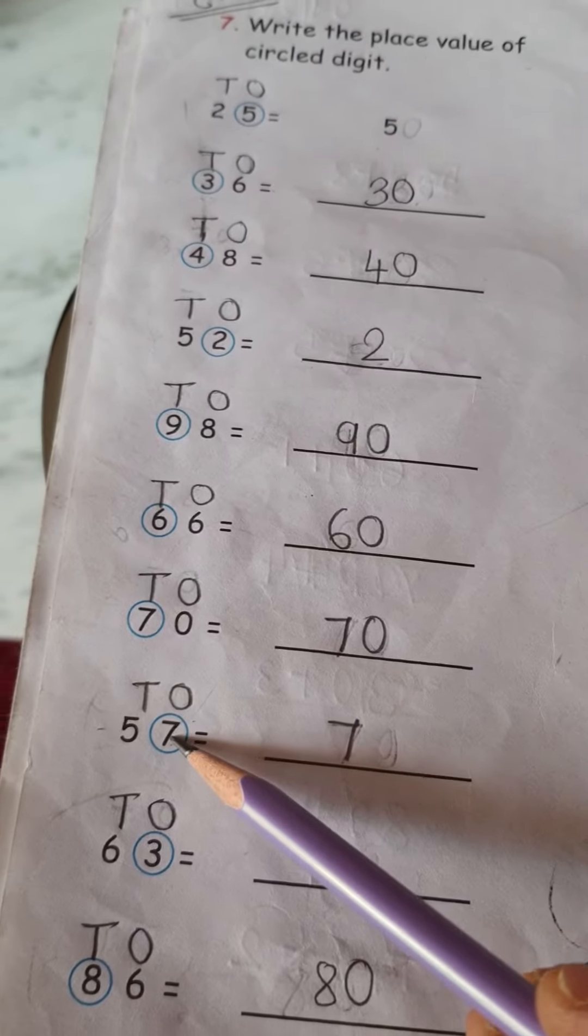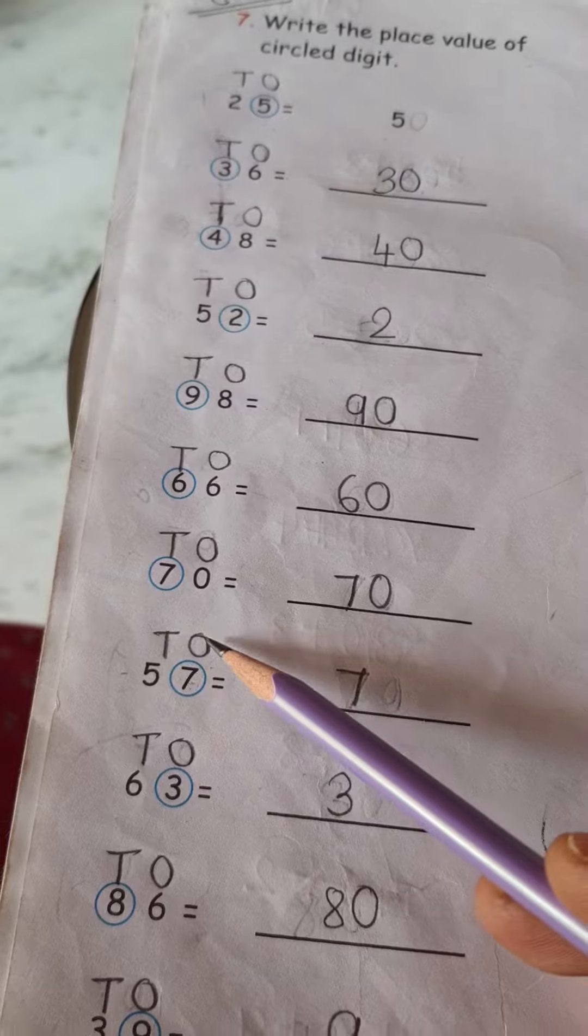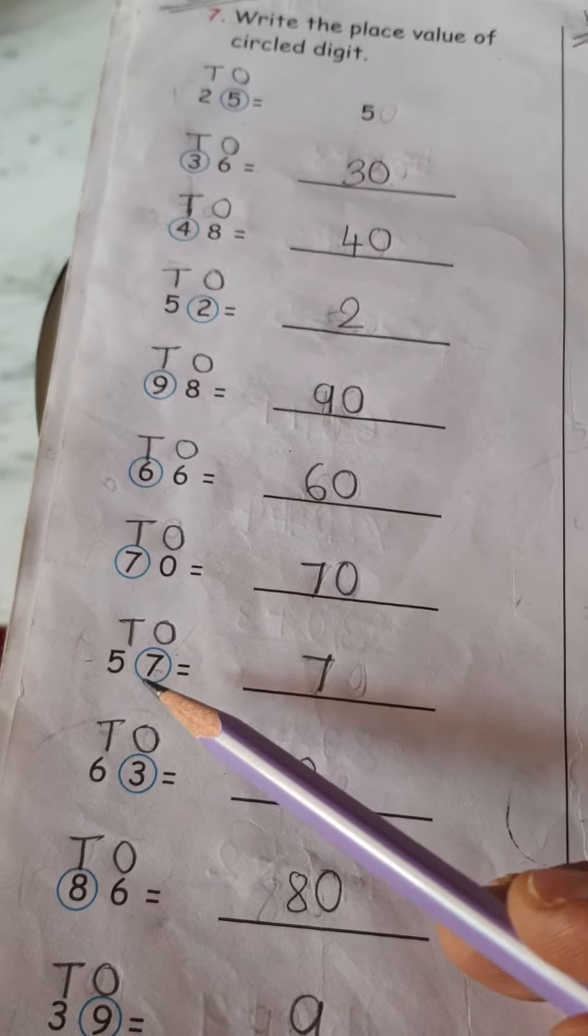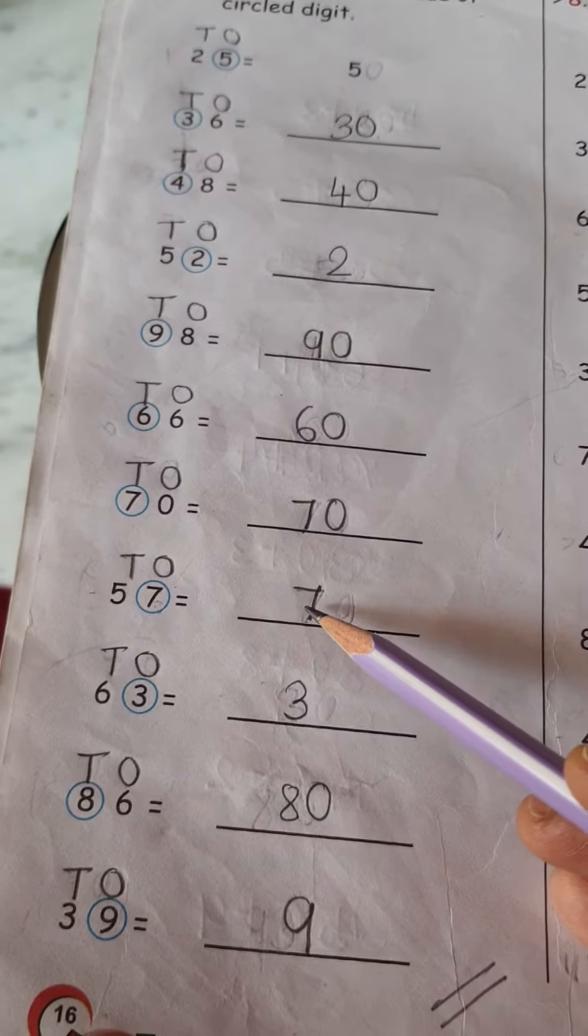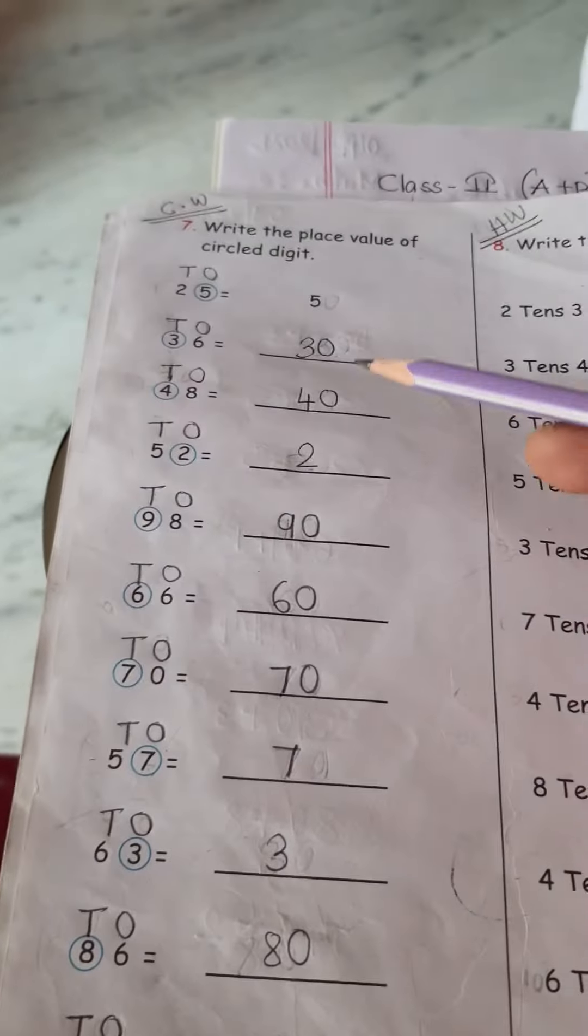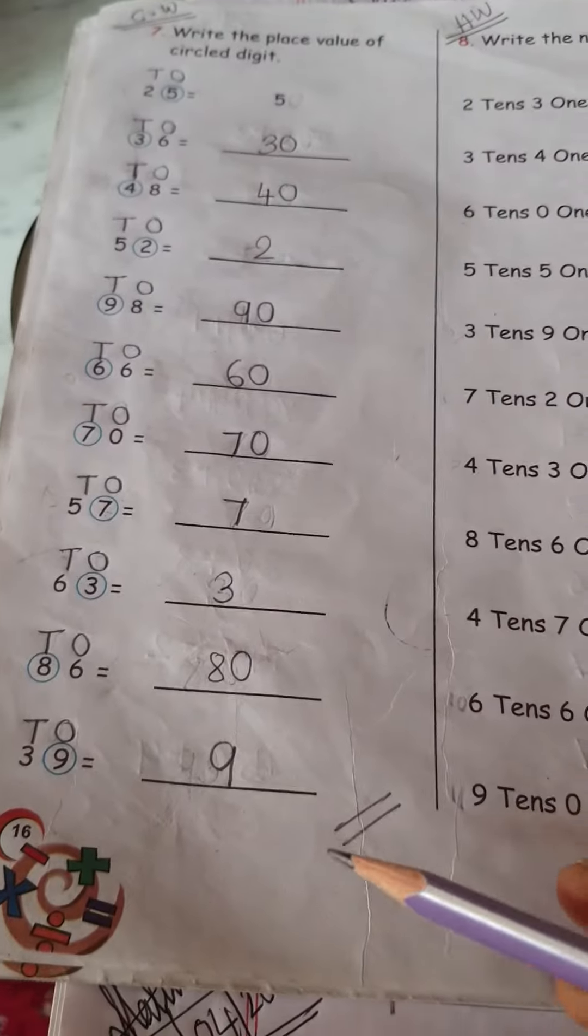Next, where is this 7? 7 is under 1's place. So what is the place value of 7? The place value of 7 is only 7. So like this we have to fill this much.